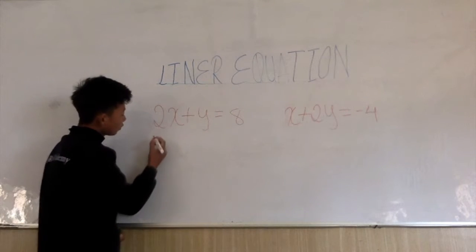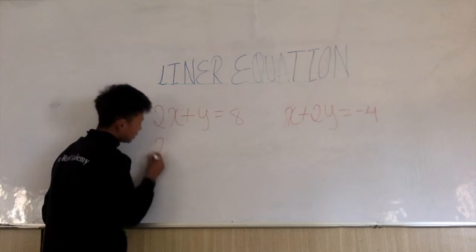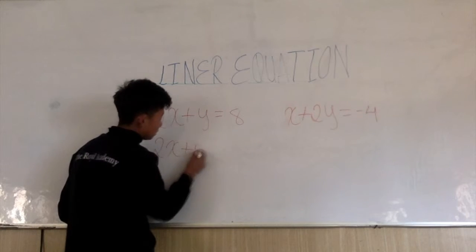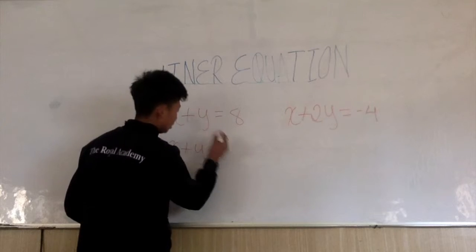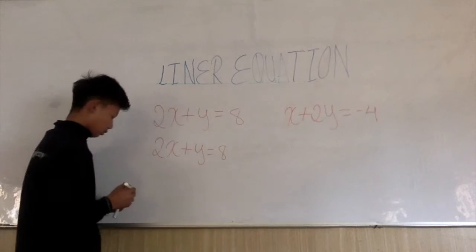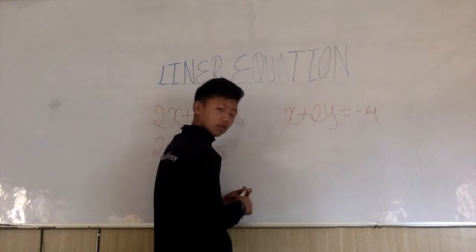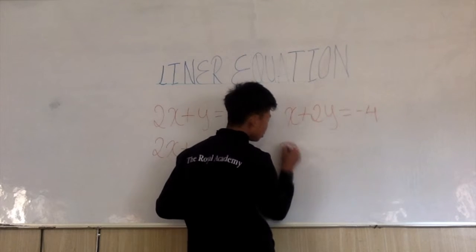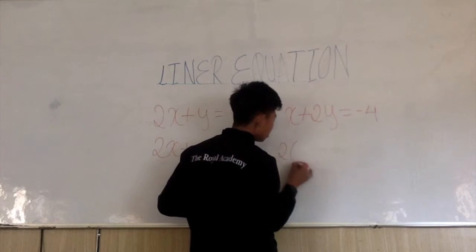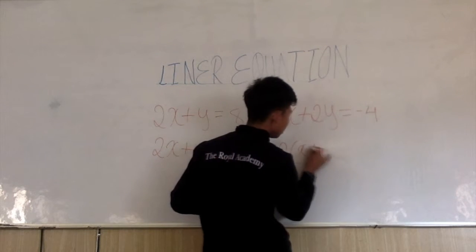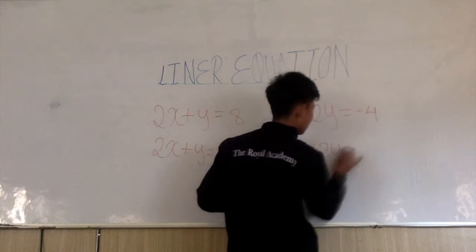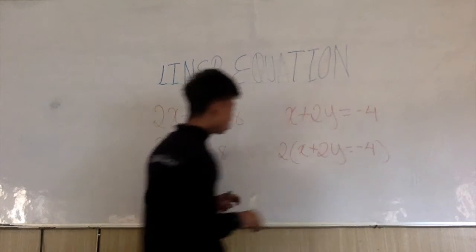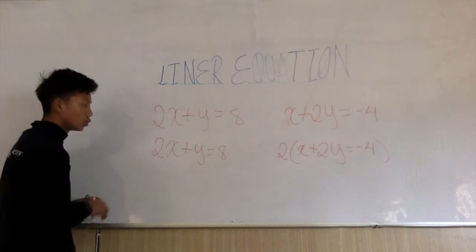First of all, I am going to keep the first equation as it is. I am going to multiply the whole second equation by 2 in order to make the coefficient of x equal to 2.